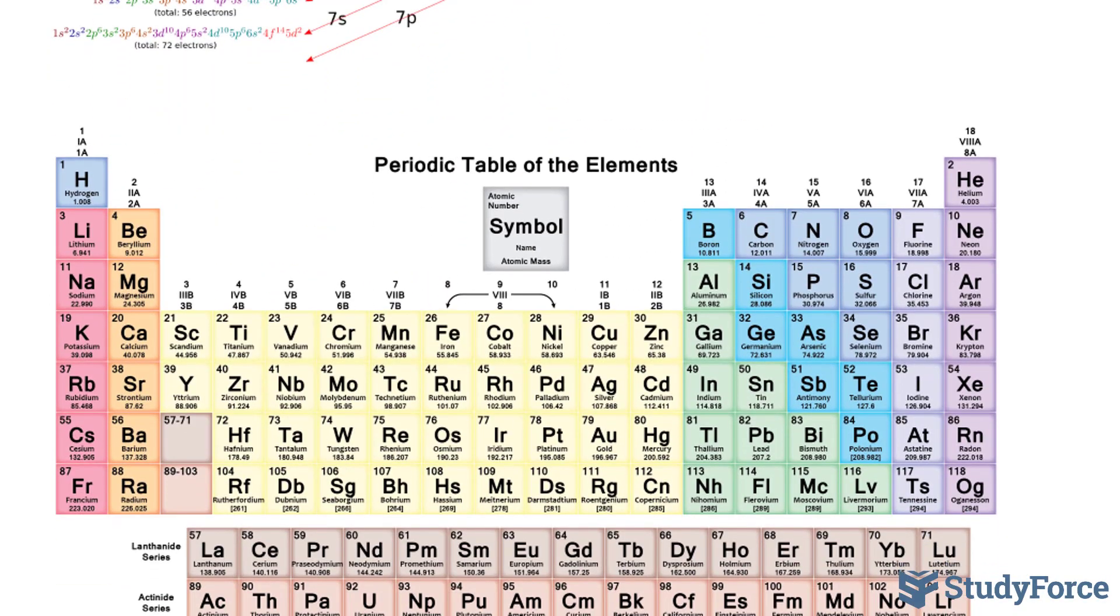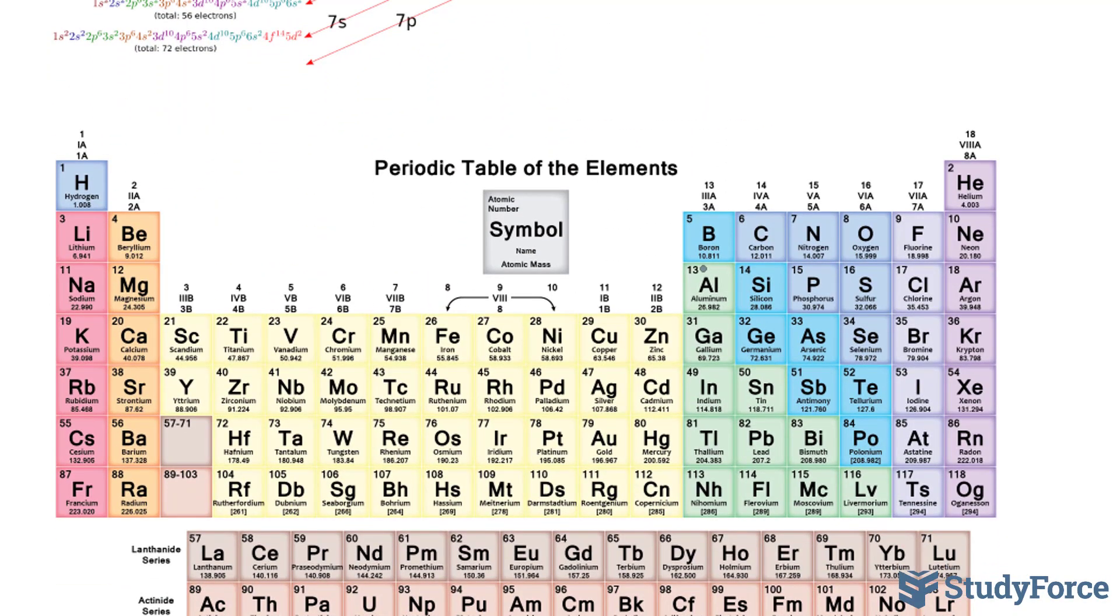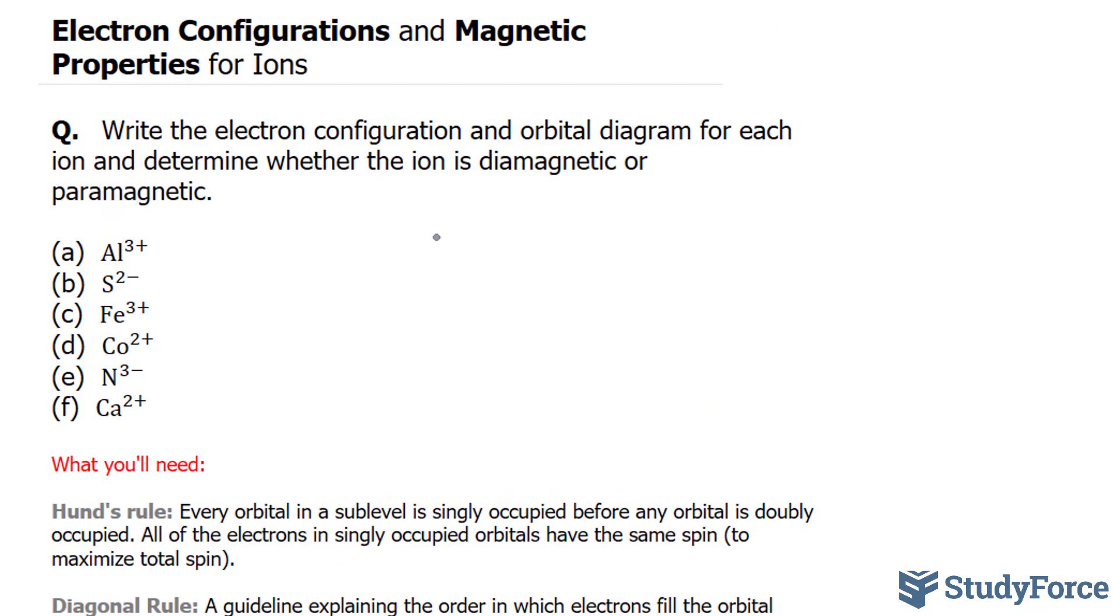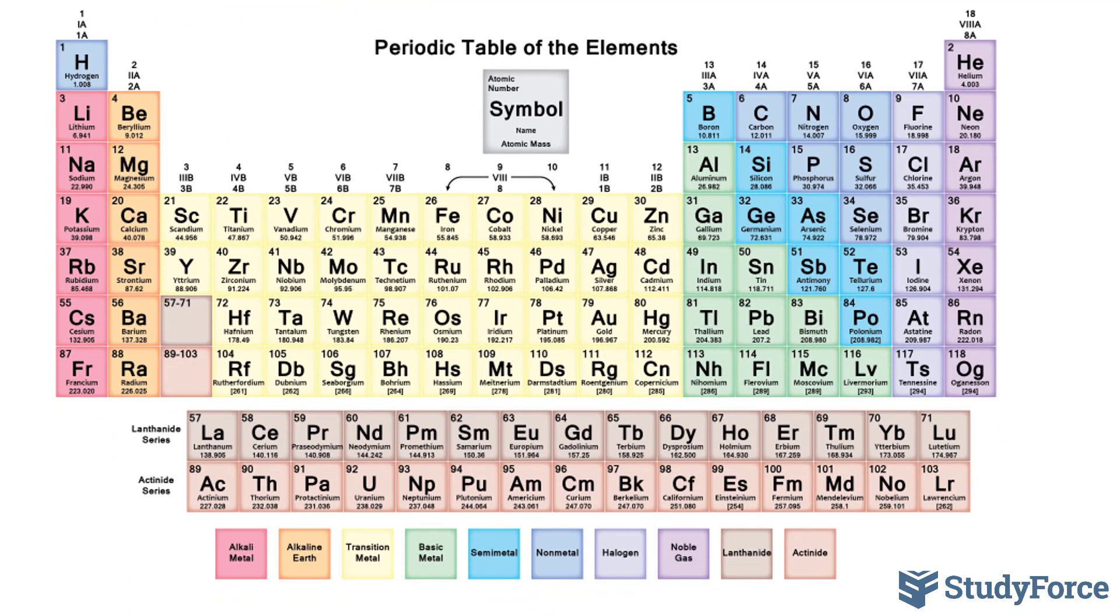You will also need a periodic table, and since aluminum is found right here, the noble gas that precedes aluminum is neon. So I'm not going to write the whole electron configuration of aluminum, that will take too long. I'll write down neon, and then the rest. So I have neon, and because aluminum is found in the p-block, this is referred to as the p-block, s, d, and f, it has an s orbital.